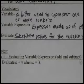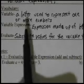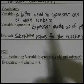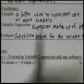First off, a variable. A variable is a letter, A, B, C, D, Z, X, Q, any letter used to represent one or more numbers.